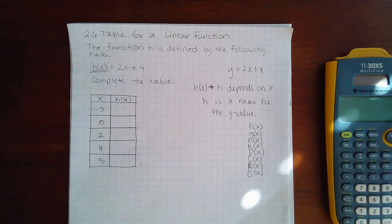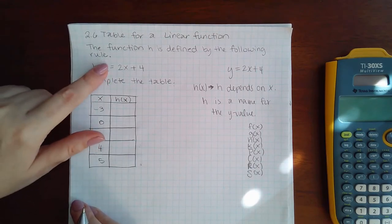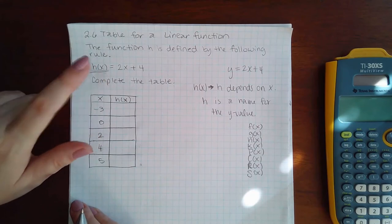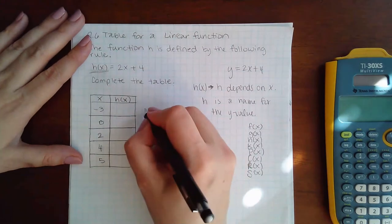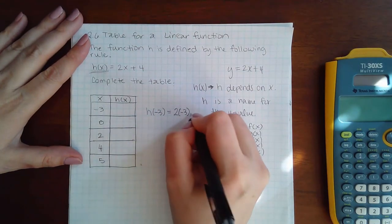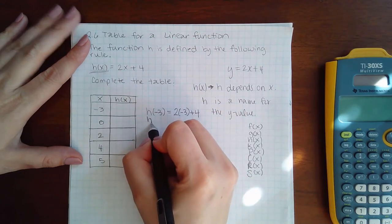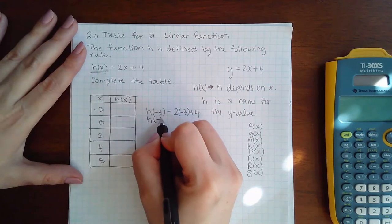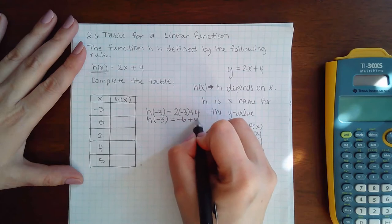Now, but what does that mean as far as being able to complete this table? All it means is that if you want to find the y value that's associated with h, this specific function, you just plug in the x values. So h of negative 3 equals 2 times negative 3 plus 4. This means the y value for h at the x value of negative 3 is negative 6 plus 4, which equals negative 2.